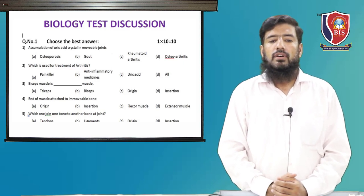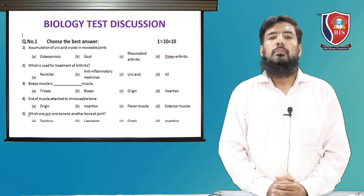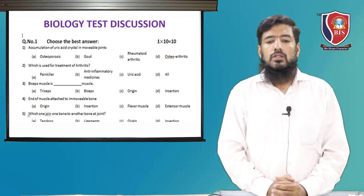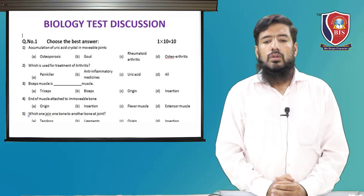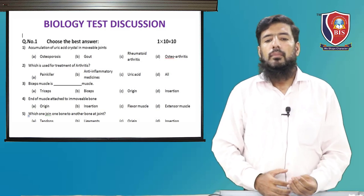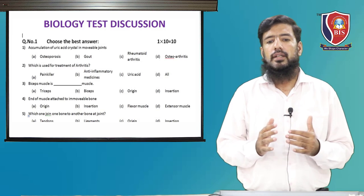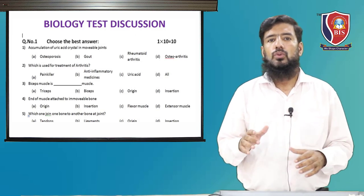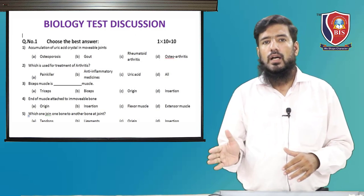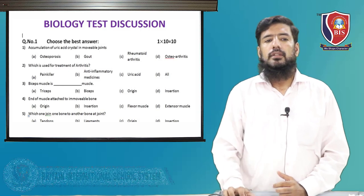MCQ 5: which tissue joins one bone to another at the place of a joint? The correct option is ligament. Ligament is a connective tissue that connects one bone to another bone at the place of a joint.